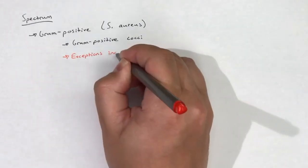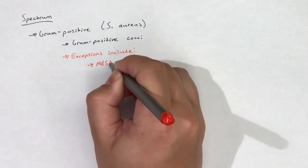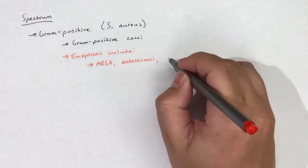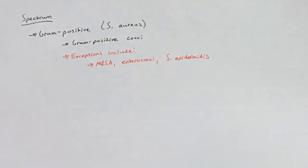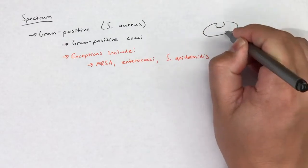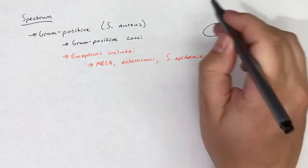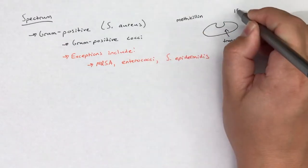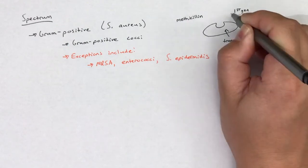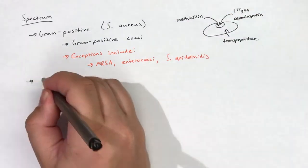The main exceptions include MRSA, enterococci, and Staphylococcus epidermidis. First-generation cephalosporins are not effective against methicillin-resistant Staphylococcus aureus (MRSA) because they rely on the same binding site on transpeptidase as methicillin.